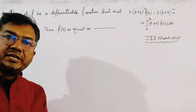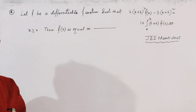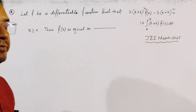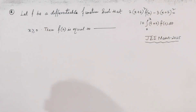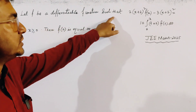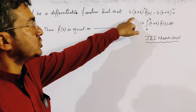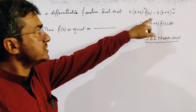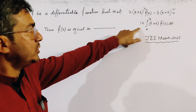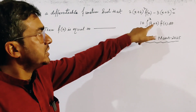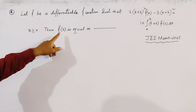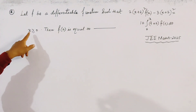A problem from integration as well as differential equations from JEE Main Mathematics 2025. The problem says: let f be a differentiable function such that 2(x+2)² · f(x) − 3(x+2)² is given by 10 times the integral from 0 to x of (t+2)·f(t) dt, and we have to find the value of f(2), where x ≥ 0.